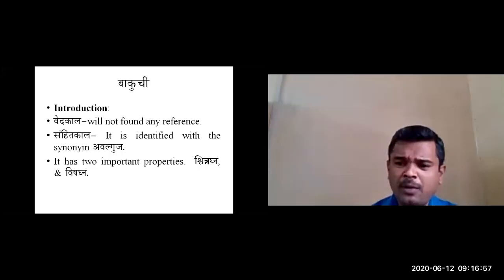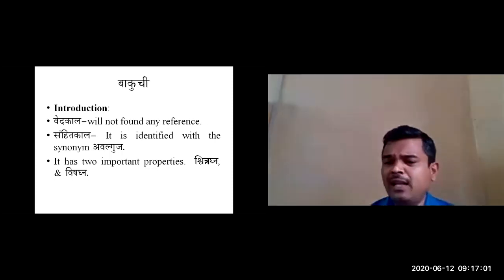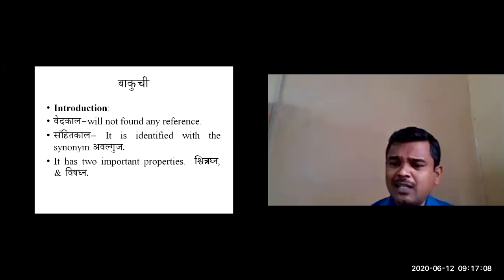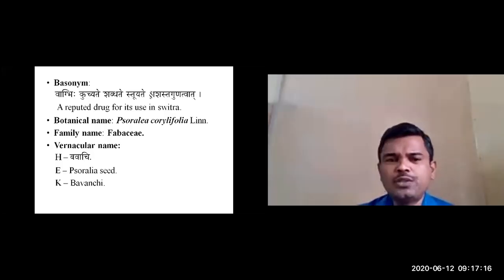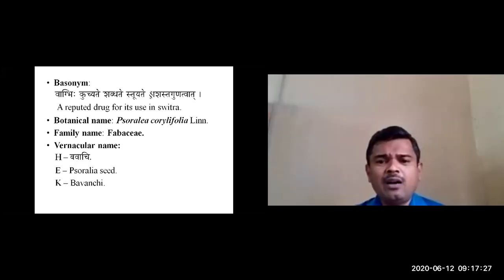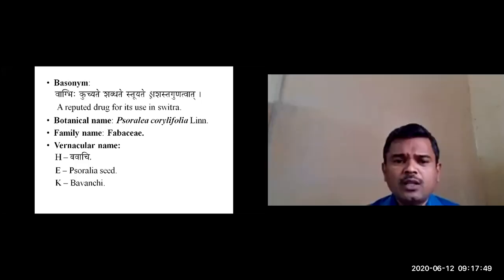The Shvitragna property is mainly highlighted by Acharya Shushruta. Regarding the name Bakuchi — because of its qualities, that is Prashasta Gunatvaad, it is a reputed drug for its use in Shvitra. Because of its specific guna it is mainly highlighted for its action in case of Shvitra. That is the basal meaning behind the name Bakuchi.